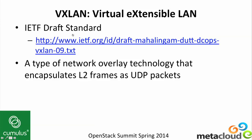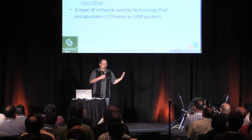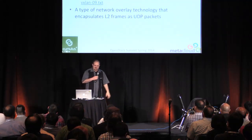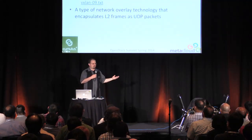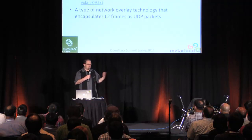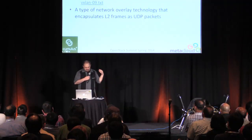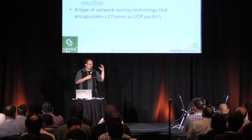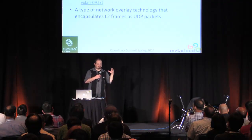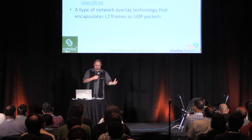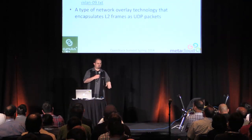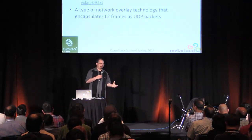So what is VXLAN? It sounds a lot like VLAN — all we did is throw an X in the middle. It's a network overlay. There are a bunch of these out there. And it's actually very simple — it sounds complicated and scary, but it's just a simple encapsulation of layer two frames using a layer three UDP packet.